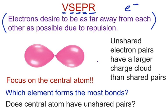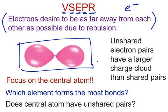Electrons carry a negative charge. Negative and negative — try to put them together, they will repel. Like charges repel. The analogy we can use is two balloons right here. If we try to squash two balloons together, they'll eventually go into a shape as far apart from each other as possible.